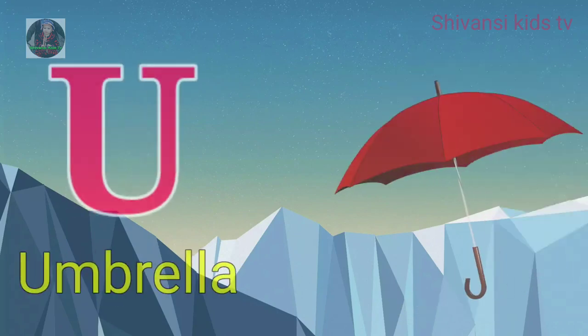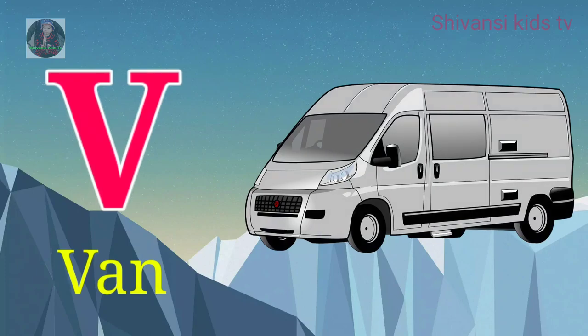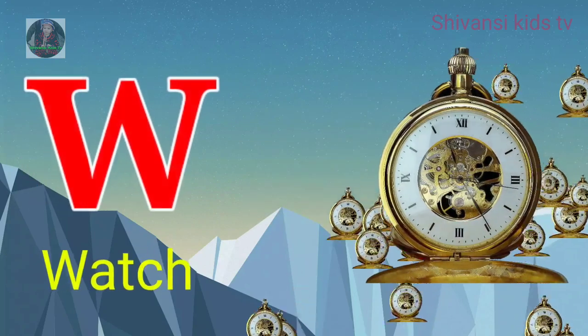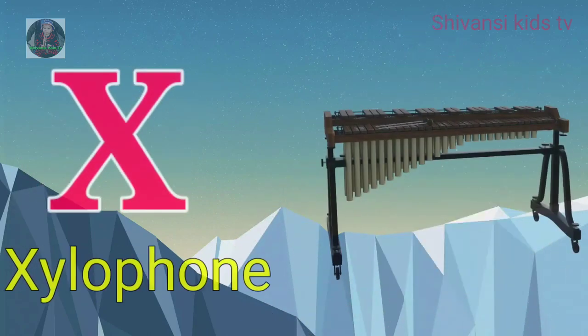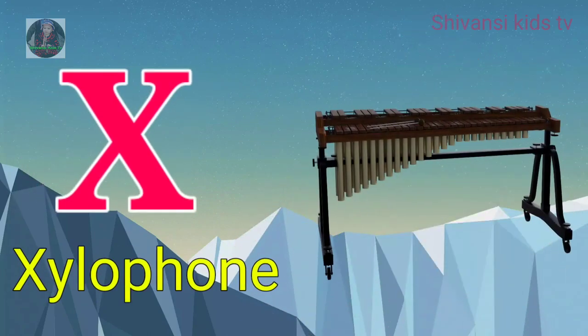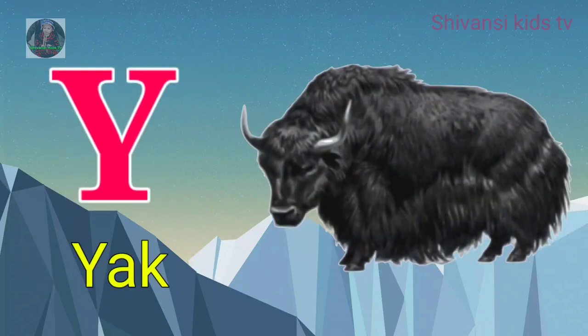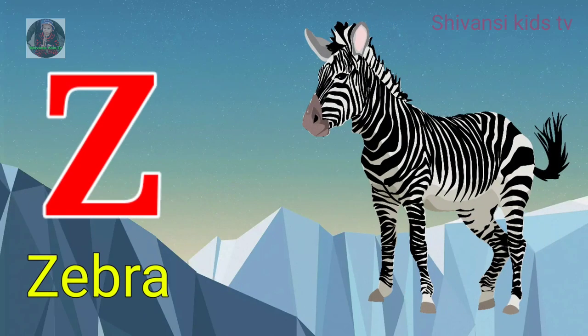U for umbrella, V for man, W for watch, X for xylophone, Y for yard, Z for zebra.